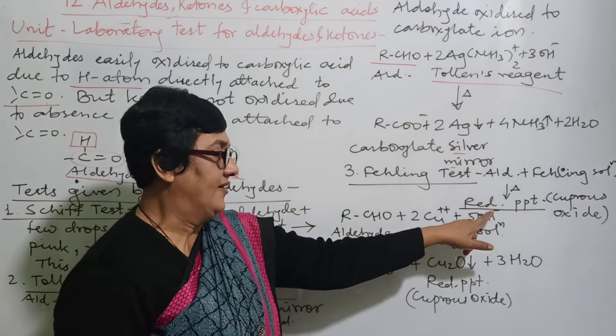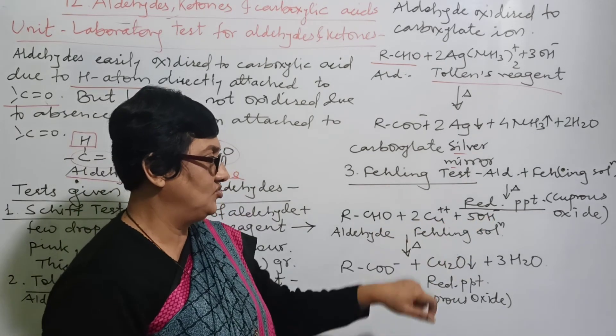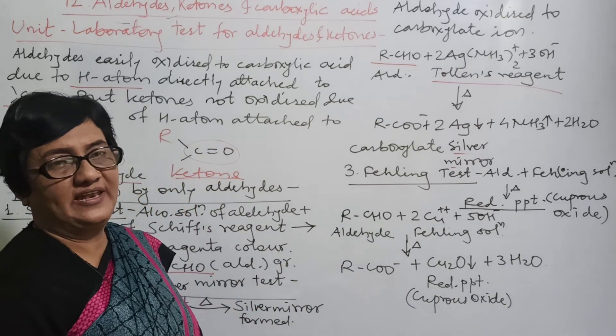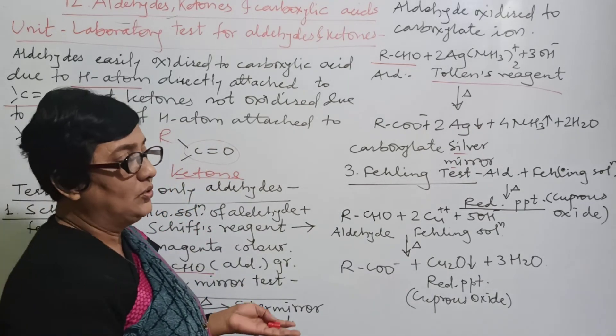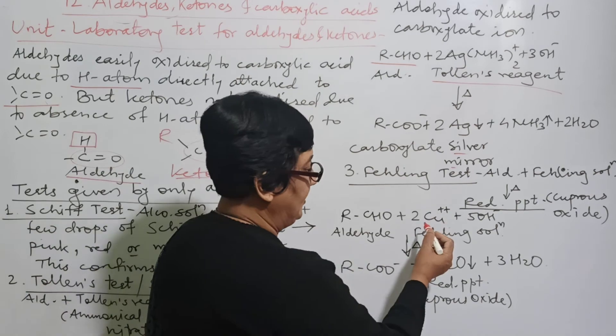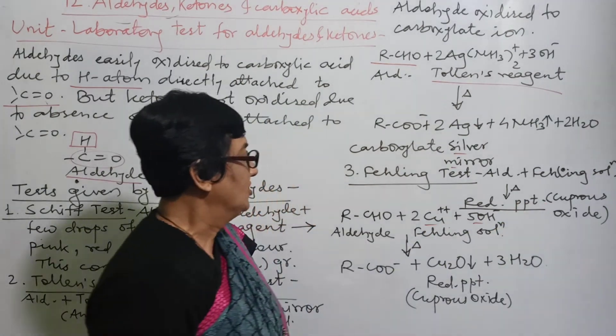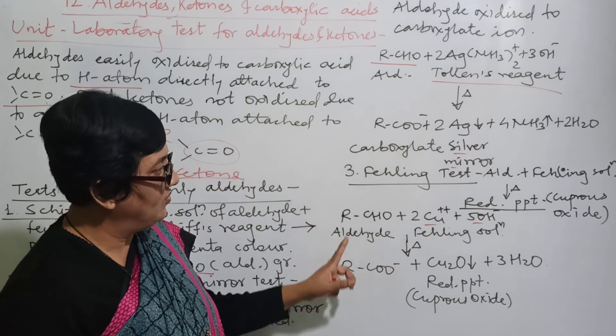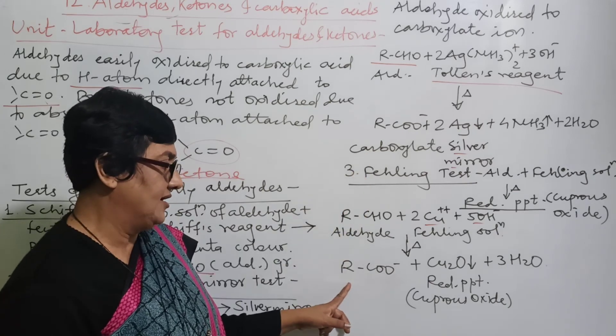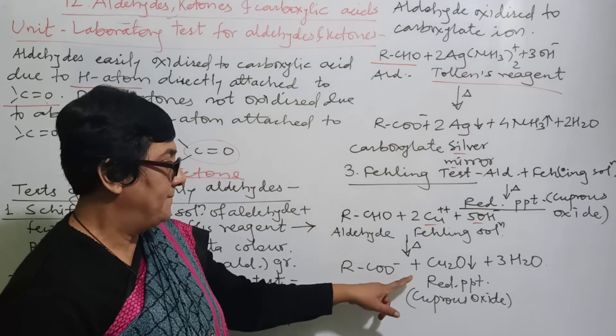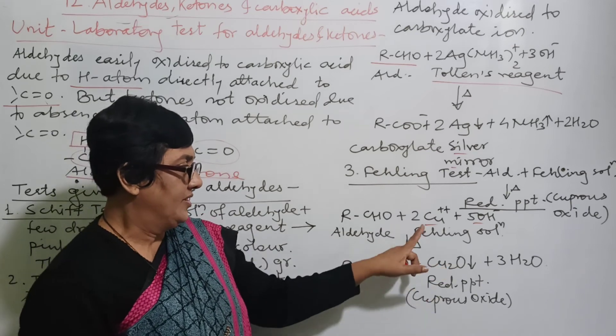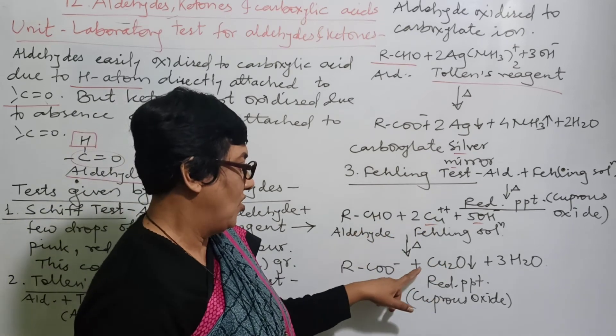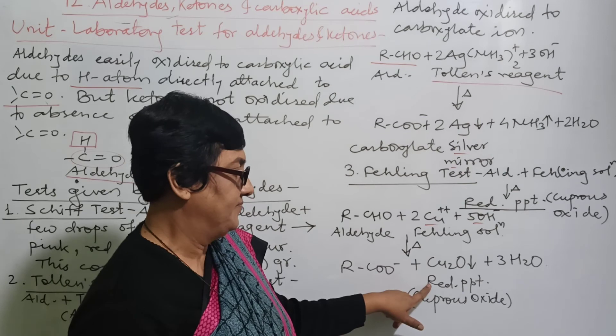Aldehyde plus copper ion plus 5 hydroxyl ions. What is this? Fehling solution. Here there are two solutions, Fehling A and Fehling B, and after mixing both...